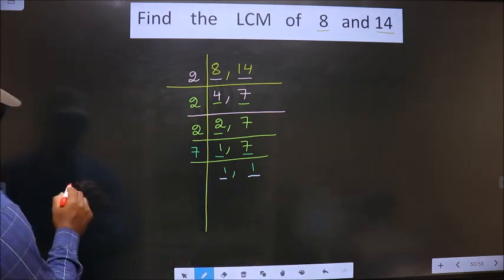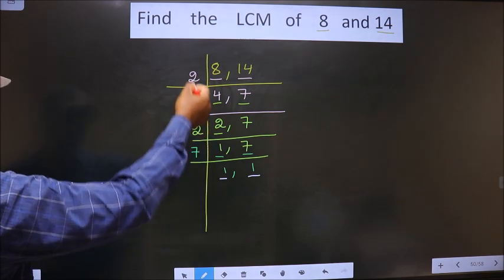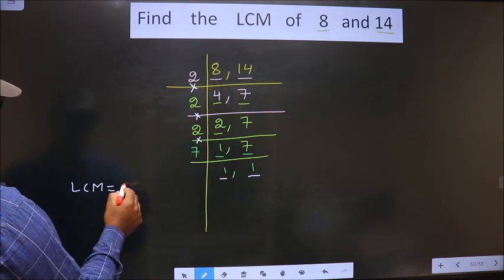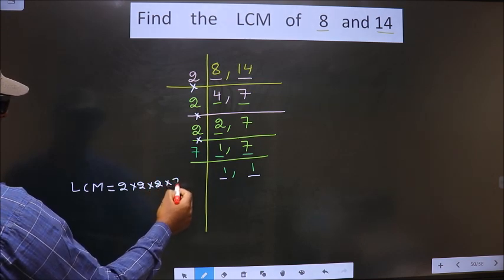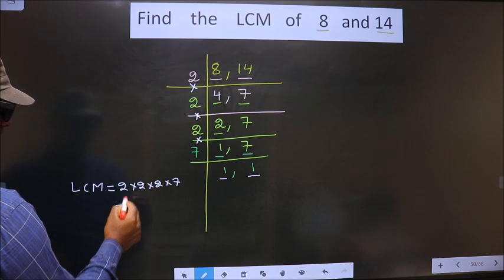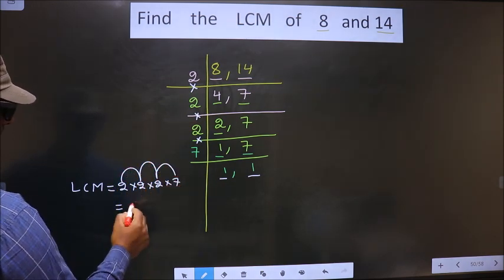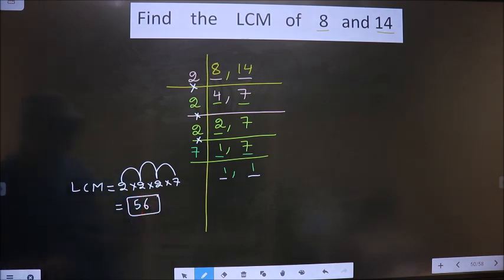So now our LCM is the product of these numbers, that is 2 into 2 into 2 into 7. So let us multiply all these numbers. 2 into 2 is 4, 4 into 2 is 8, 8 into 7, 56 is our answer.